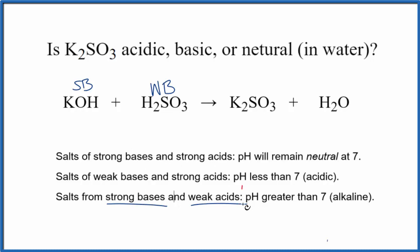It says, according to the rules, the pH will be greater than 7. We'll have an alkaline or basic solution. So according to the rules, K2SO3 in water forms a basic solution. The pH will be greater than 7.